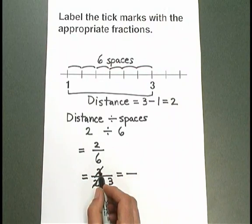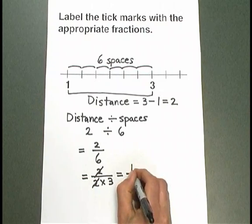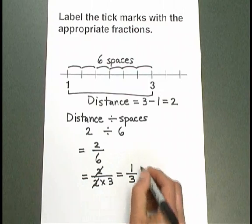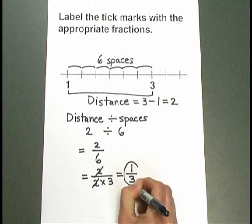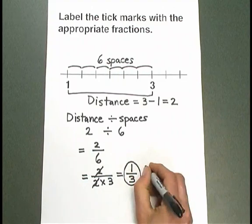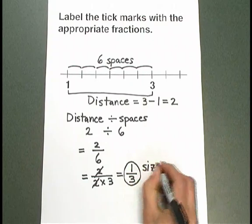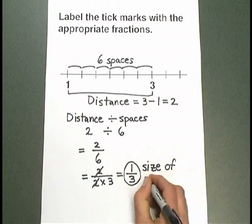Because there are no factors left above, there's a 1 left behind. Down below, I have a 3. So I have 1 over 3. That's 1 third. 1 third is the size of each space.